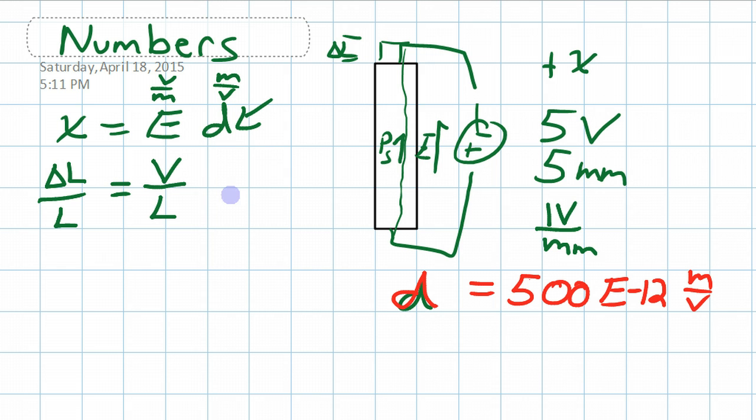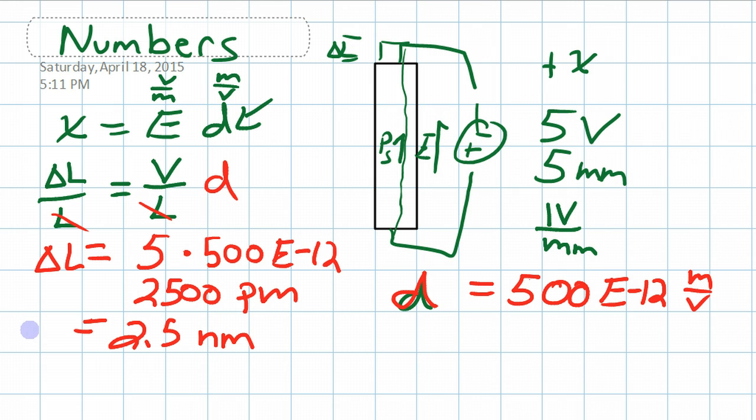To the minus 12 meters per volt. So this is an extremely small number. So let's continue this. So we can cross out these L's. So the change in the length is equal to how many volts here? We put 5 volts over it, multiplied by 500, and these are all in SI units, so no worries there. We're going to end up with meters E to the minus 12. So basically this is 2500 picometers, or we can say 2.5 nanometers. This is the amount this material will change. You can imagine, I think a human hair is 100 micrometers. And what's 100 micrometers? It's 100,000 nanometers.